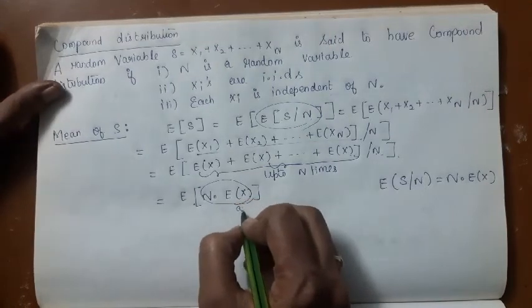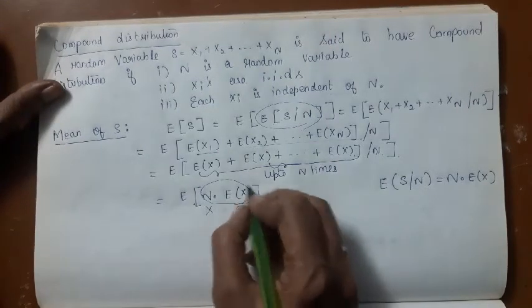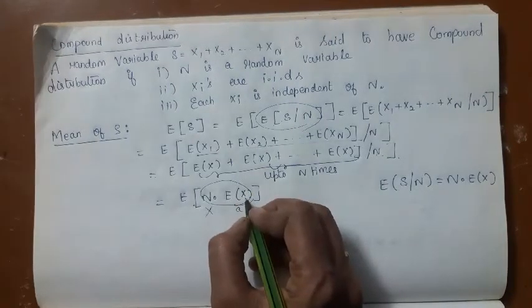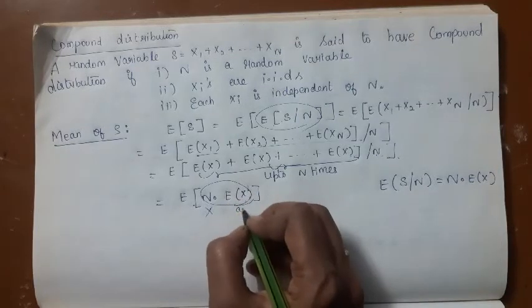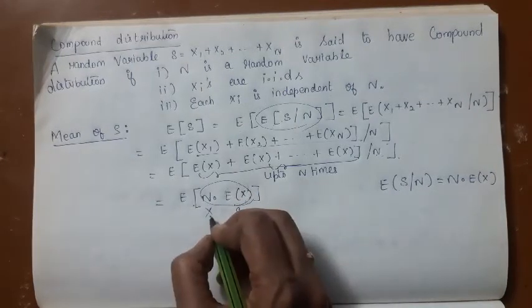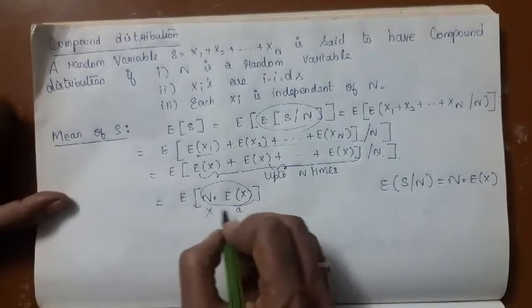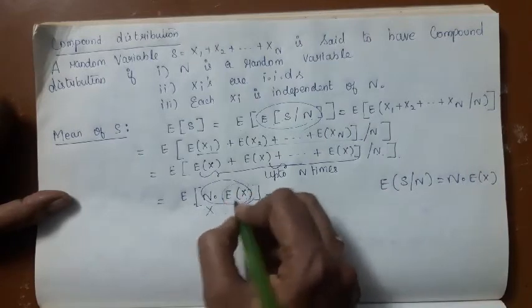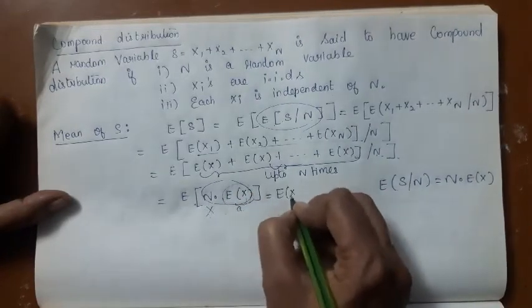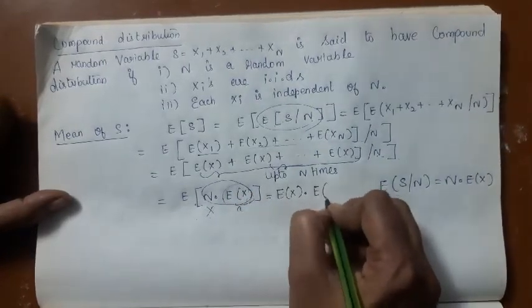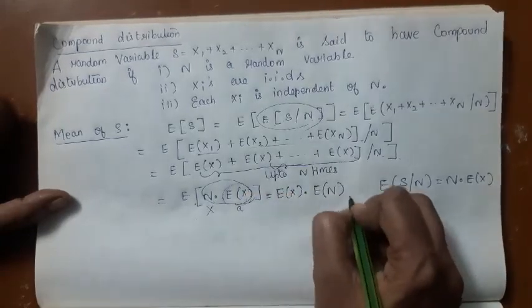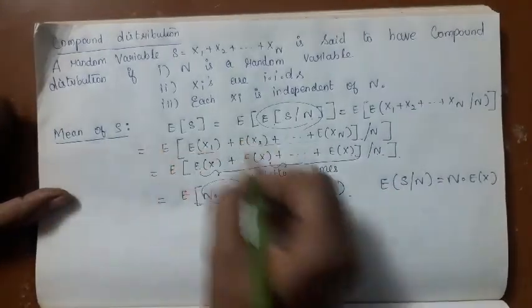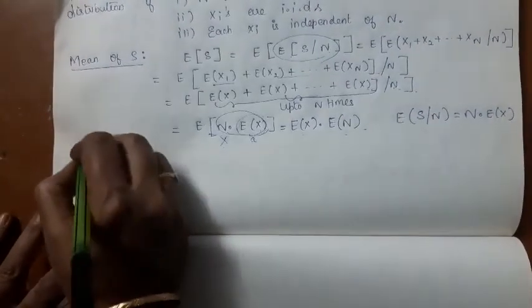Now E[S|N] = N · E[X] is of the form E[a·X], where a is a constant and N is a random variable. After taking expectation, E[N · E[X]] = E[X] · E[N], since E[X] is a constant. So the mean of S is E[S] = E[X] · E[N].